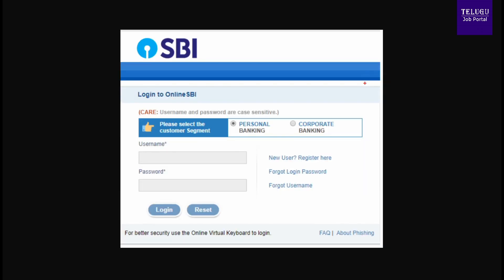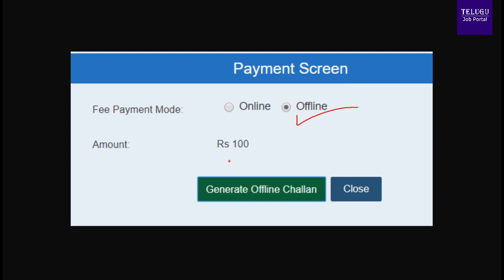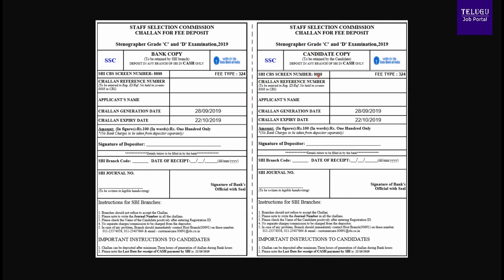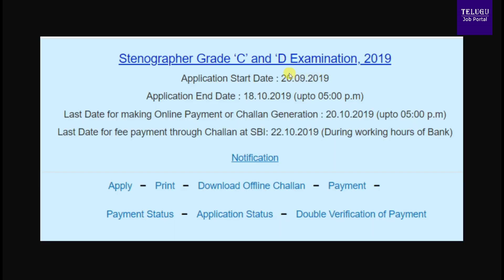Enter your username and password for net banking and proceed. You can also generate an offline payment challan. Once you generate the challan, you can use it to pay at the bank. Alternatively, use the online payment option to complete the fee payment.